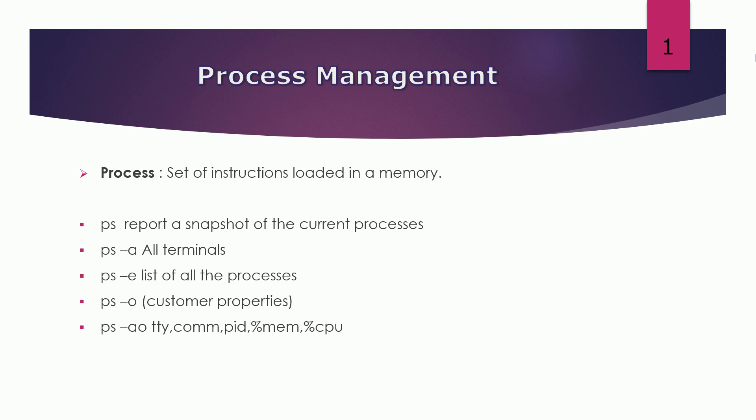PS -o denotes custom properties. It means that you can create your own command output format. For example, you can specify TTY for the terminal, command, PID, percentage memory, and percentage CPU. Whatever output you get about the process, it will be according to your requirement — you can include PID, memory, CPU, and nice value. To use this, you use the hyphen O option with your custom properties.